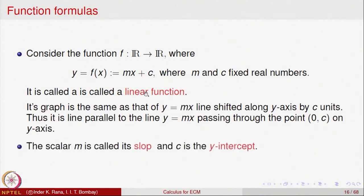This is called the slope-intercept form of the linear equation because m denotes the slope and C denotes the intercept. Geometrically, there is one and only one line passing through two points in the plane, and we can utilize that fact.